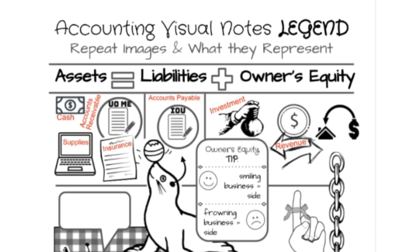Then we have revenue — that's any money coming in by sales. Then we have expenses — that's money going out to pay for things like rent, utilities, and advertising. Then we have withdraw, which is when a business owner takes money out for personal use. Even in a sole proprietorship, they should keep personal records and business records separate. They have the right to take money out whenever they want, but they do need to keep those records separate.